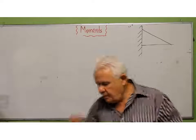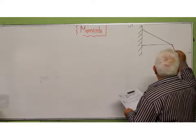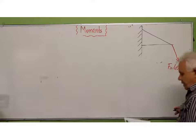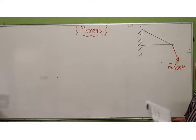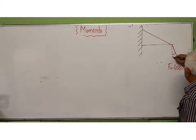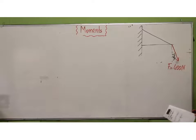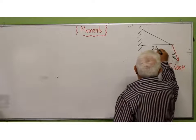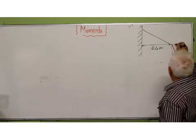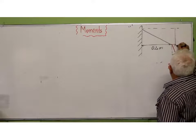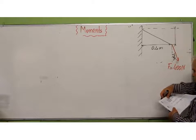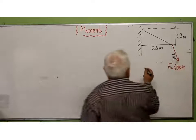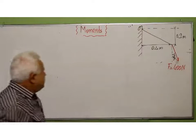We have a force of 400 newtons applied at an angle of 20 degrees. This distance here is 0.4 meters, and from here to here is 0.2 meters. And we want to calculate the moment of this force about point O.